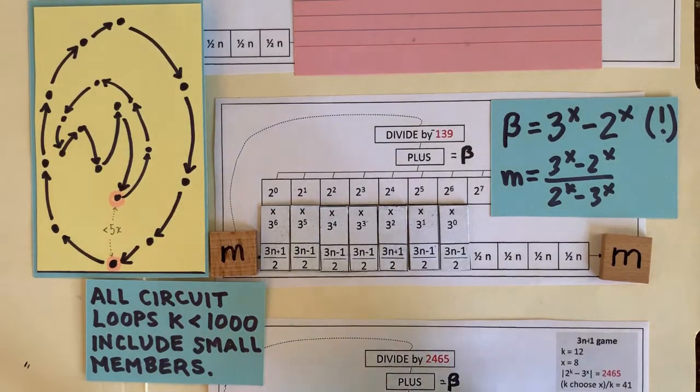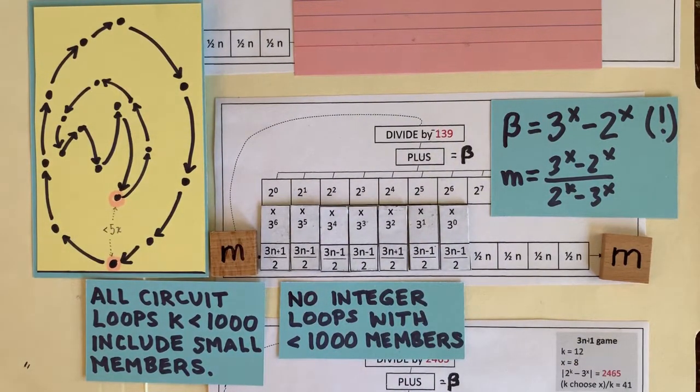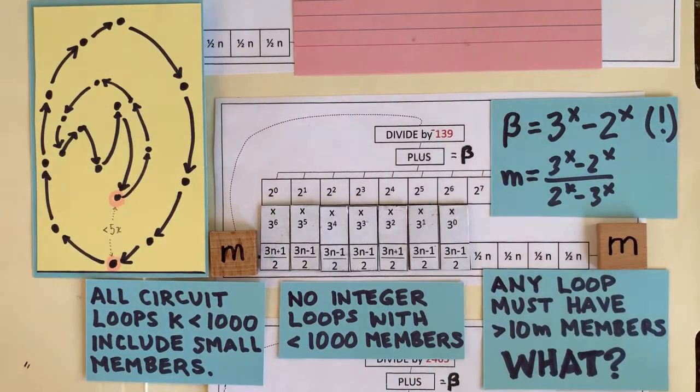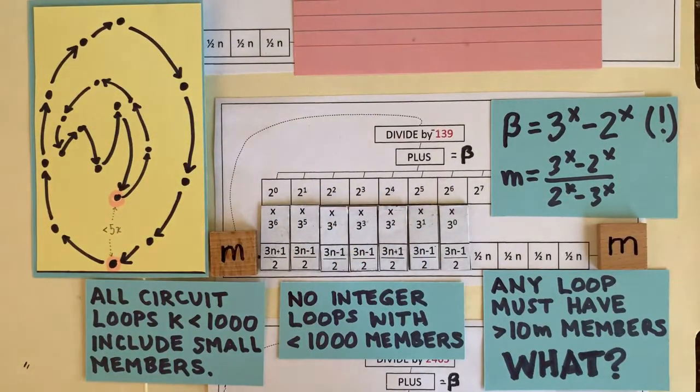So that means forget it. Loops of length 1,000 aren't going to work any more than loops of length 4 are because any integer loop would include some small integers that are already known to go to 1. And with some similar reasoning, mathematicians have discovered that any 3n plus 1 loop would actually have to contain at least 10 million members.